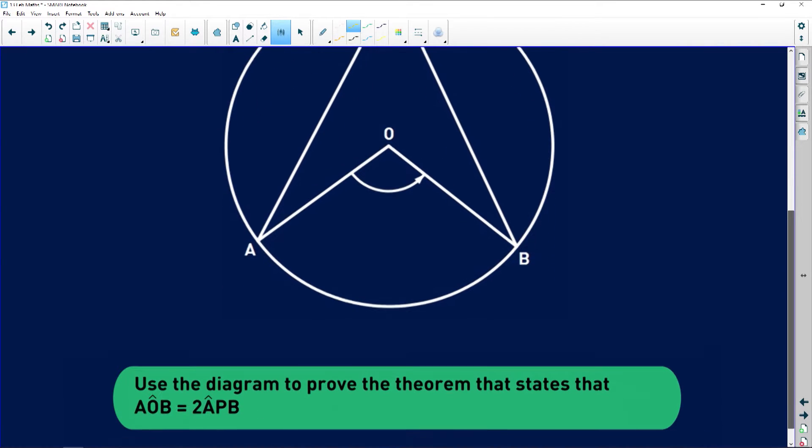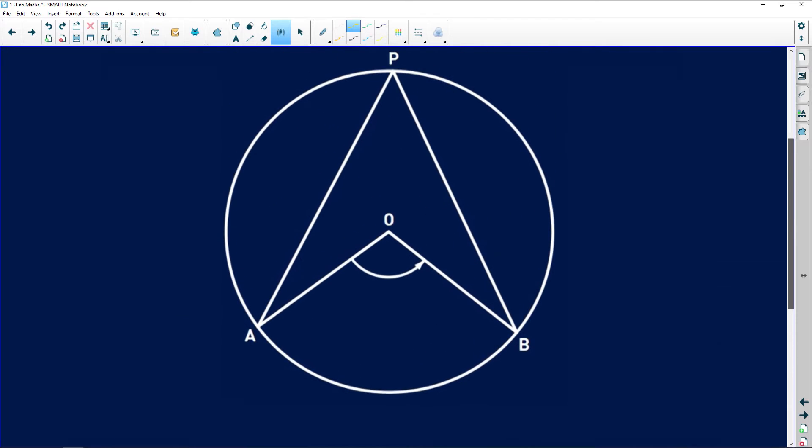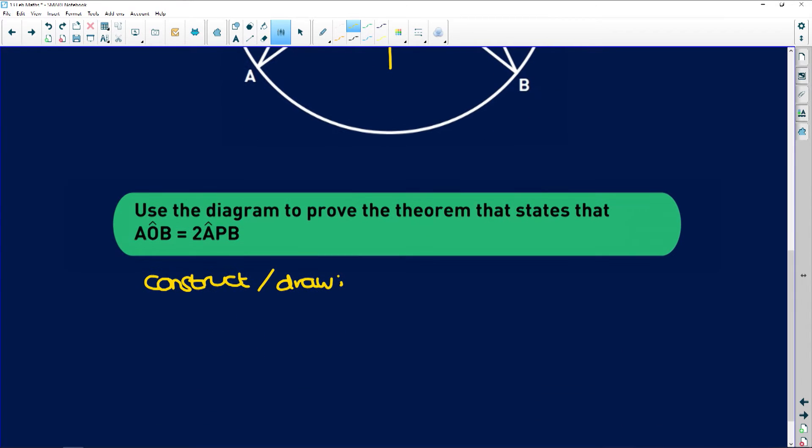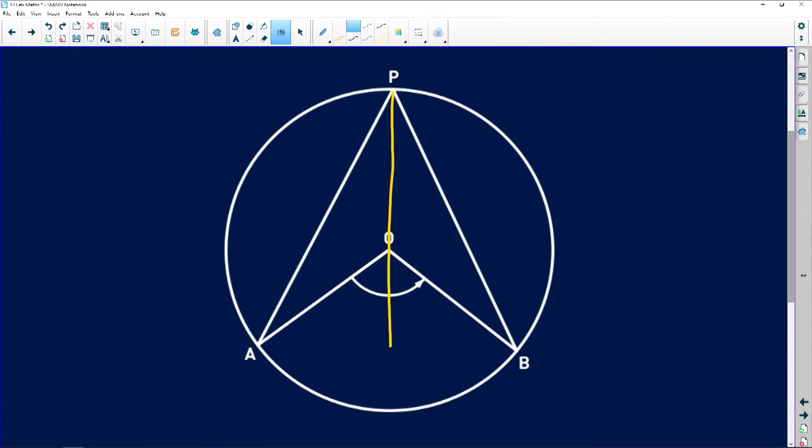More often than not with a proof you're going to need to construct. So firstly we say construct or draw. We're going to be drawing radius PO produced to let's say point Q.